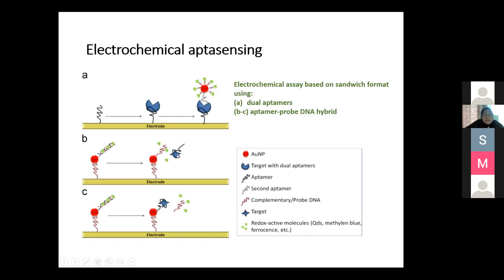For electrochemical aptasensing, the approach is based on a sandwich format using dual aptamers — as in design A — or aptamers with probe DNA hybrids using complementary DNA for designs B and C. It's the same principle as for the optical sensors, but here the aptamer/probe complex is attached to an electrode, which gives a highly enhanced signal for the electrochemical aptasensing.